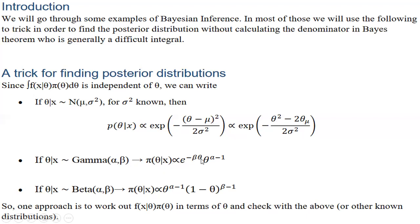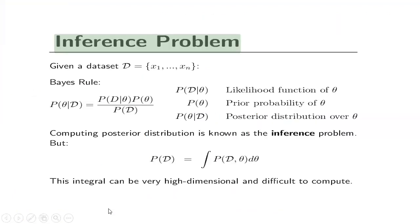If θ given x follows a Beta(α, β) distribution, then π(θ | x) is proportional to θ^(α−1) · (1−θ)^(β−1). One approach is to work out f(x | θ) and π(θ) in terms of θ and match with these or other known distributions, then check with the known form.